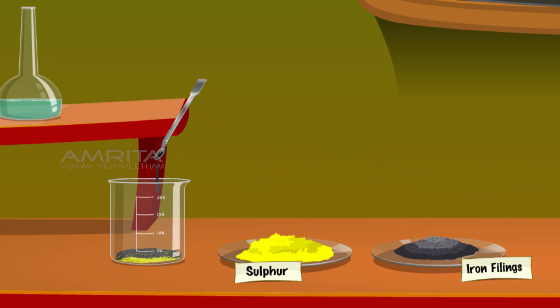Add the iron fillings into the same beaker using a spatula. Stir the contents of the beaker using a glass rod and label this mixture as A.